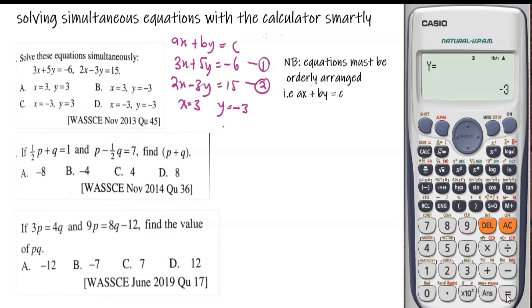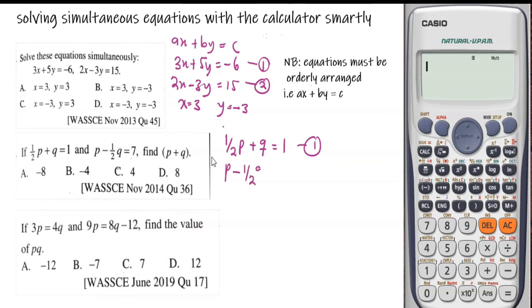That is how we solve the simultaneous equation using the scientific calculator. Moving on to the next example: half p plus q equal to 1, and p minus half q equal to 7. Find p plus q. Even though the question uses p and q instead of x and y, consider them as the variables x and y. Equation 1 is ½p plus q equal to 1, and equation 2 is p minus ½q equal to 7. Both equations have been written in the standard form ax plus by equal to c.